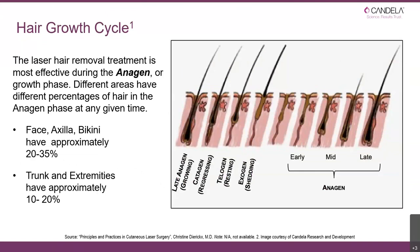You can see we go from the growing phase — the anagen phase — into regression, then the resting phase, and then the shedding phase. Then we start the process again, with a new hair forming within the follicle. When we get to the late stage of anagen, we have that complete structure again, and the whole cycle begins.